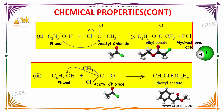When phenol reacts with acetyl chloride, the lone pair of oxygen attacks the carbonyl carbon, causing the chlorine to leave, forming ethyl acetate along with hydrochloric acid.